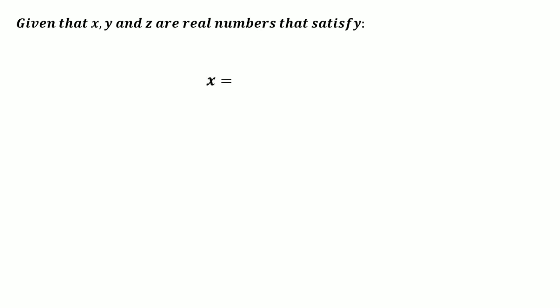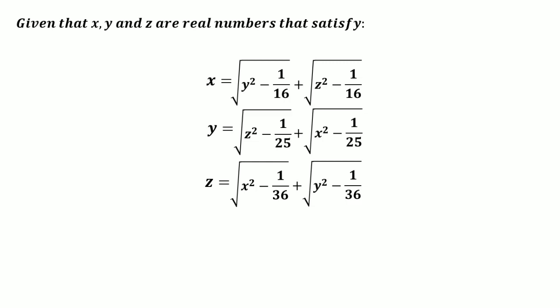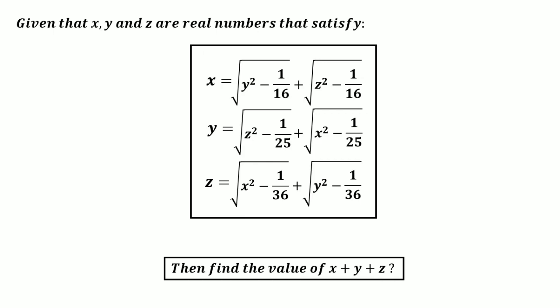Hi everybody, today I have an algebraic question for you. It is given that x, y, and z are real numbers that satisfy these equations: x equals the square root of (y² − 1/16) plus the square root of (z² − 1/16); y equals the square root of (z² − 1/25) plus the square root of (x² − 1/25); and z equals the square root of (x² − 1/36) plus the square root of (y² − 1/36). Find the value of x + y + z.